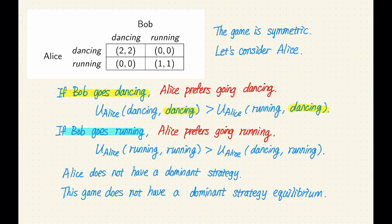So this is the first case when Bob goes dancing. If Alice goes dancing, then her utility is two. If she goes running, then her utility is zero. So of course, Alice strictly prefers going dancing than going running. In this case, dancing is better for Alice.